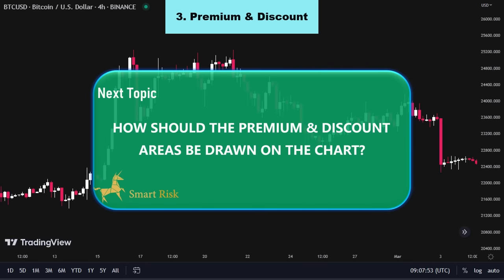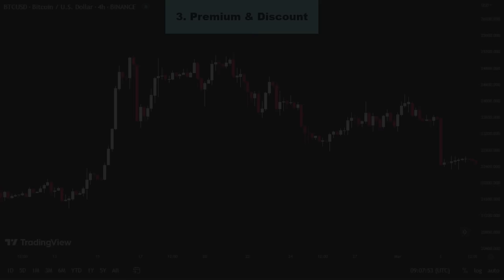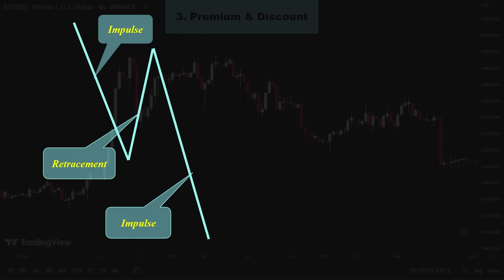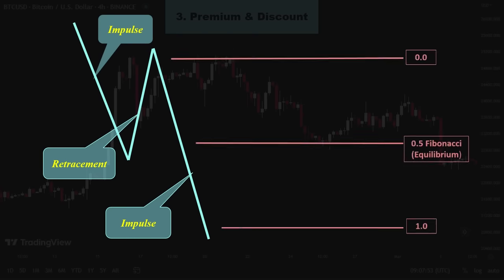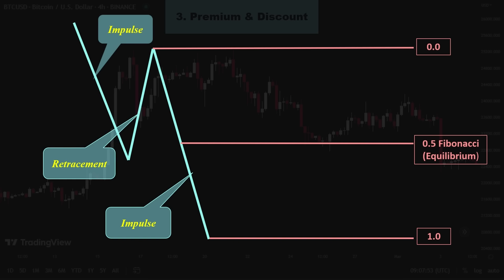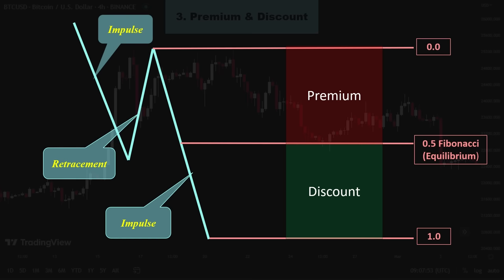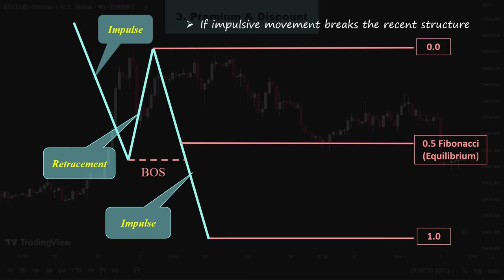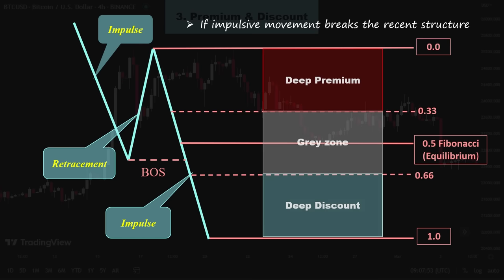How should the premium and discount areas be drawn on the chart? To identify premium and discount areas, the Fibonacci tool can be used by connecting the swing high and swing low of the price. The zone located below the 0.5 Fibonacci level is known as the discount zone, while the zone above the equilibrium line is known as the premium zone. It's important to note that these zones are only reliable if there is an impulsive movement that breaks the recent structure. To further improve our analysis, we can divide it into three equal parts and assign them different colors. We should aim to buy in the discount zone and sell in the premium zone.